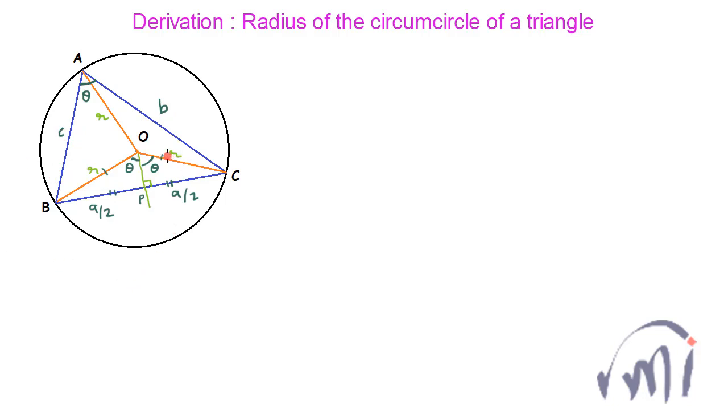So here we have the radius of the circle. In triangle OCP, A over 2 is equal to R sine theta, or from here you can say R is equal to A divided by 2 sine theta.